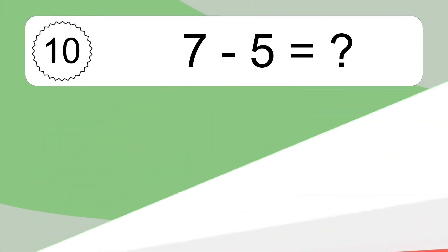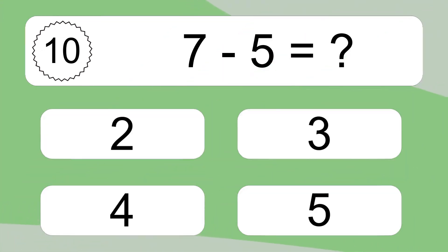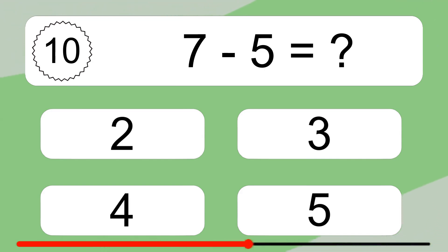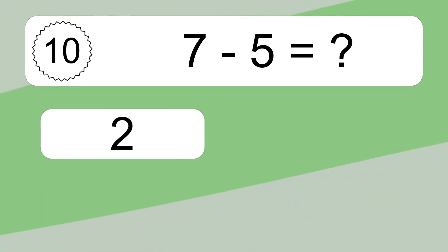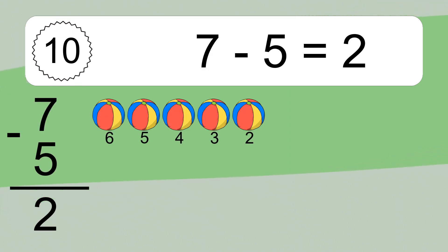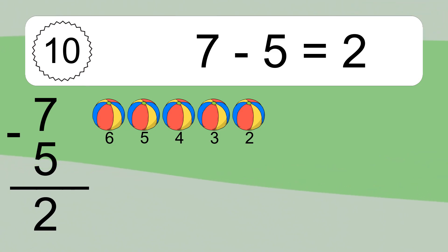7 minus 5 equals what? 7 minus 5 equals 2. Let's count it. 6, 5, 4, 3, 2.